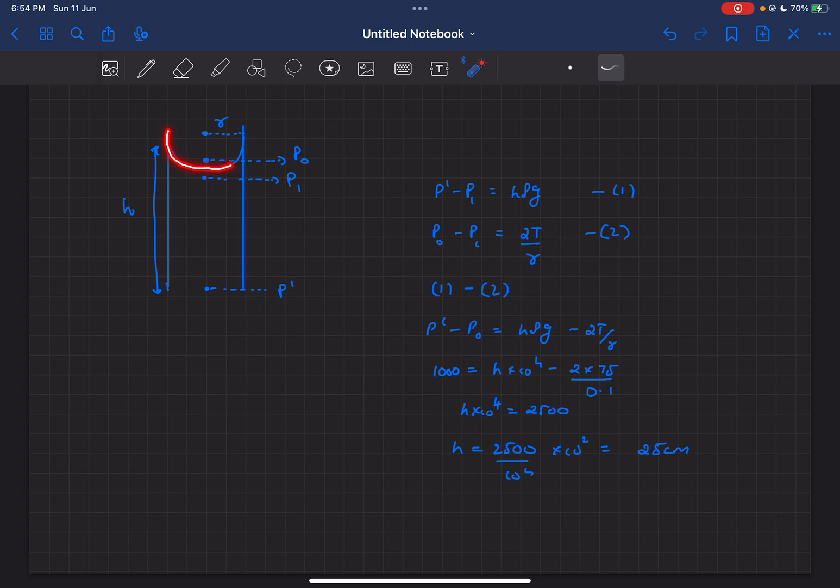This would be the meniscus of the fluid. We can assume the pressure just beneath the meniscus to be p1 and the pressure just above to be p0 because it's air above. Now it's given that the contact angle for the fluid is zero.